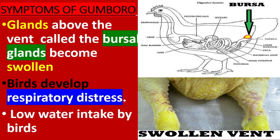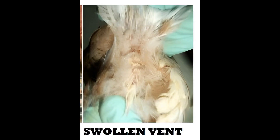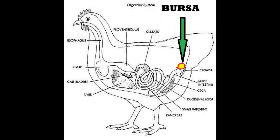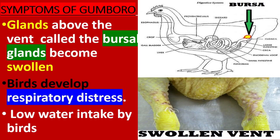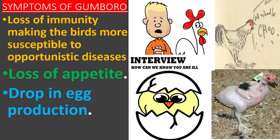Symptoms of gumboro disease: the glands above the vent become swollen, birds develop respiratory distress, there is low water intake, loss of immunity making birds more susceptible to other opportunistic diseases, loss of appetite, and a drop in egg production.